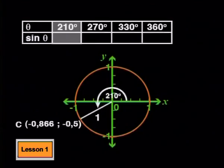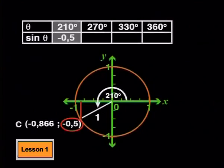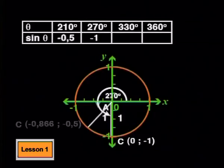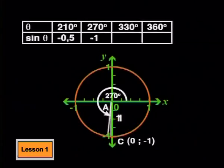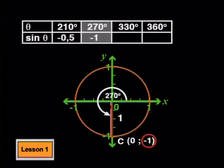At 210 degrees, sin theta has decreased to negative a half or negative 0.5. Now, if we rotate the line to 270 degrees, the sin theta is negative 1.